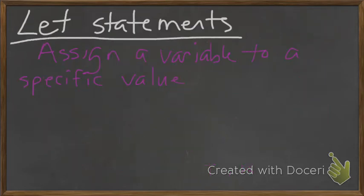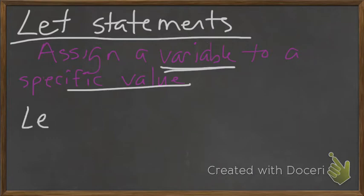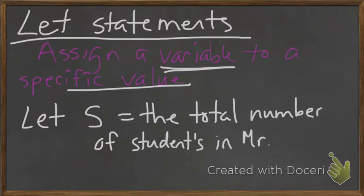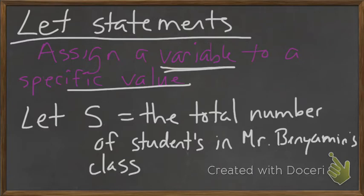Let statements. These are something we haven't really looked at before. A let statement assigns a variable to a specific value. So, if I wanted to talk about the number of students in my class, for example, I could say, let S equal the total number of students in Mr. Benyman's class. And in many cases, this value will be told to us, or it will be given to us. So, if we say that S equals 27, it's literally just 27.